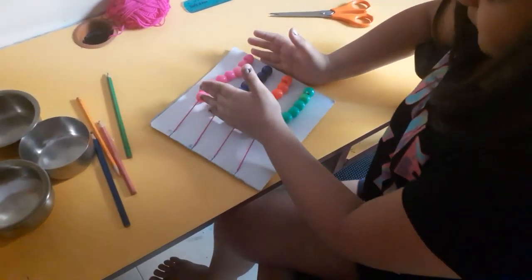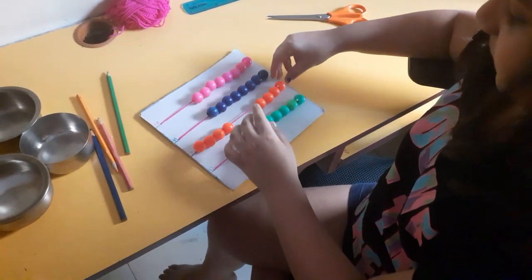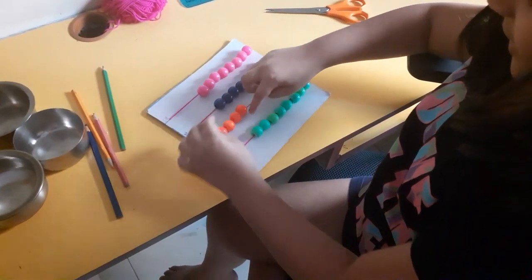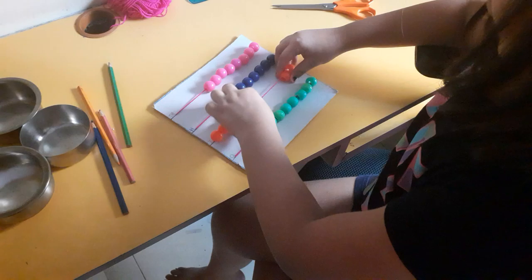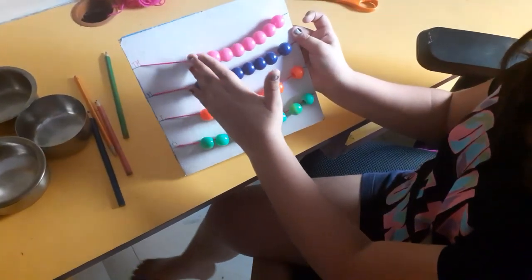Or you can also do, how much is 30 plus... if I have like 40 and I add one more, how much will it be? 50. So like that you can also do. So yeah, my abacus bead turned out pretty well.